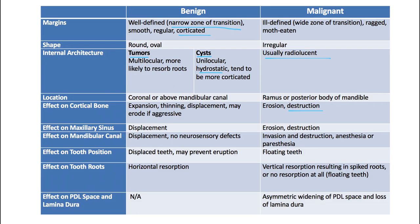The effect on the maxillary sinus is similar — benign lesions will displace it, whereas malignancies will erode or destroy it. For the mandibular canal, benign lesions will displace it with very limited neurosensory disturbances, whereas malignancies can invade and destroy that canal, causing anesthesia or paresthesia. Benign lesions can displace teeth and may block their eruption, whereas malignancies cause floating teeth — they eat all the bone around the teeth and may even resorb tooth roots, leaving teeth appearing to float in space.